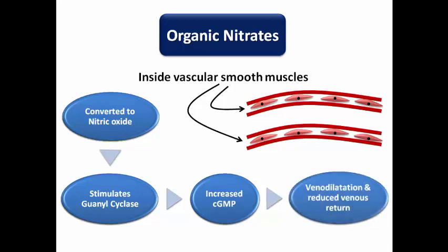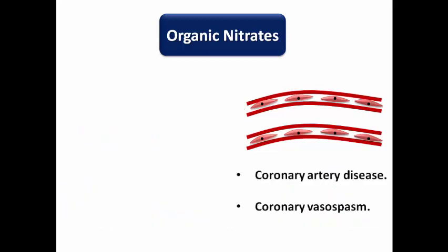Another action is venodilatation, which reduces venous return to the right side of the heart and decreases blood flow to the lungs, resulting in decreased pulmonary venous congestion in heart failure patients. The main uses of nitrates are in coronary artery disease, coronary vasospasm, and as a vasodilator.